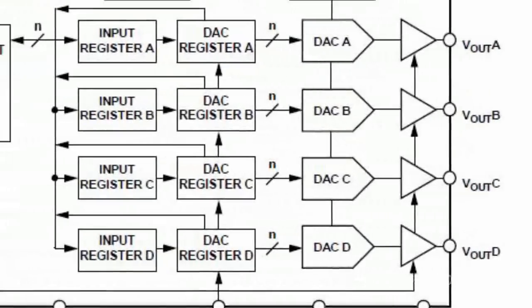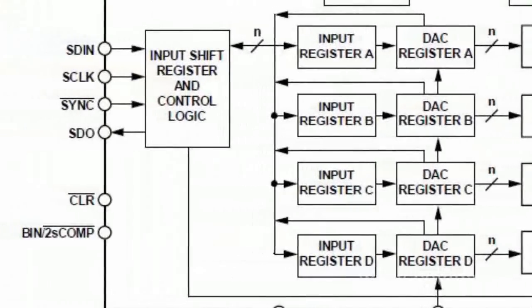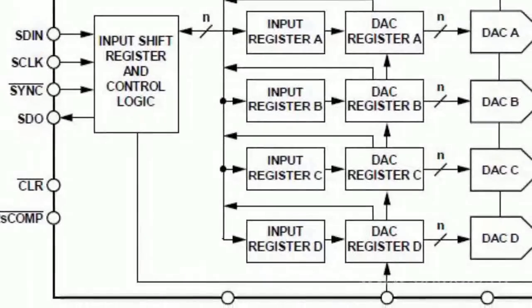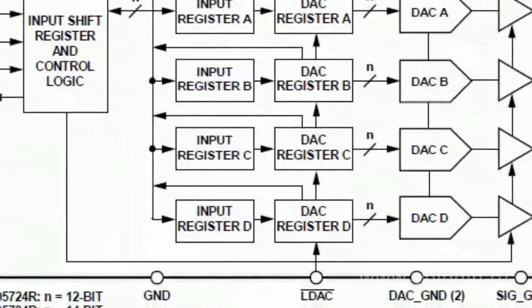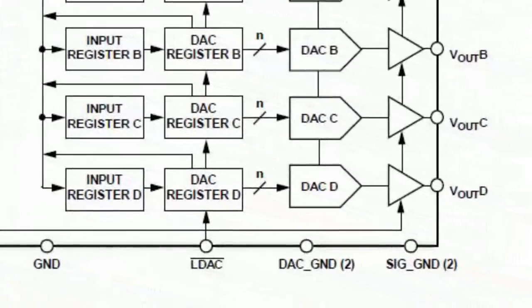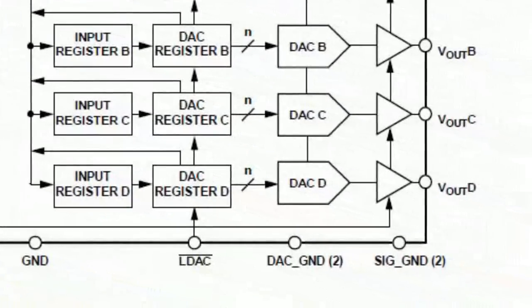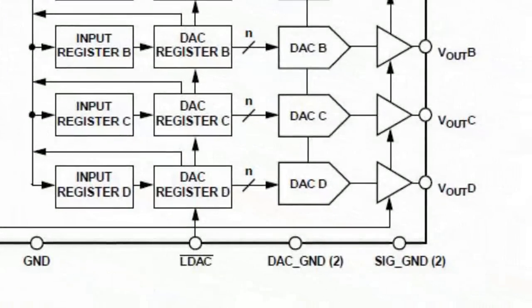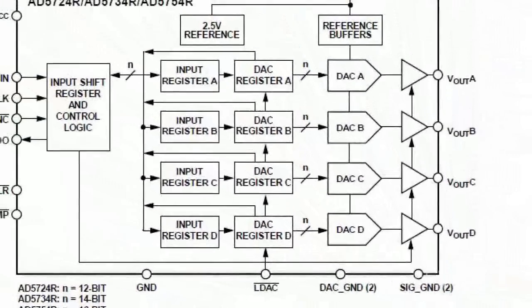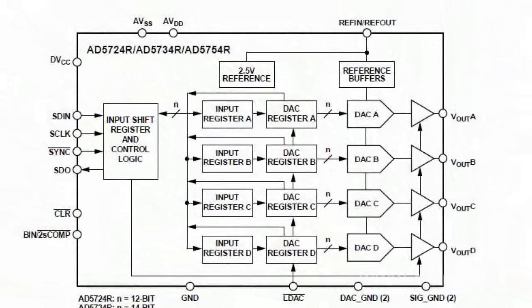The inbuilt programmable precision amplifier provides a rail-to-rail output, which allows using the dynamic output range at full capacity. All digital-to-analog converters of the family operate in the industrial temperature range from -40 to 85 degrees Celsius.